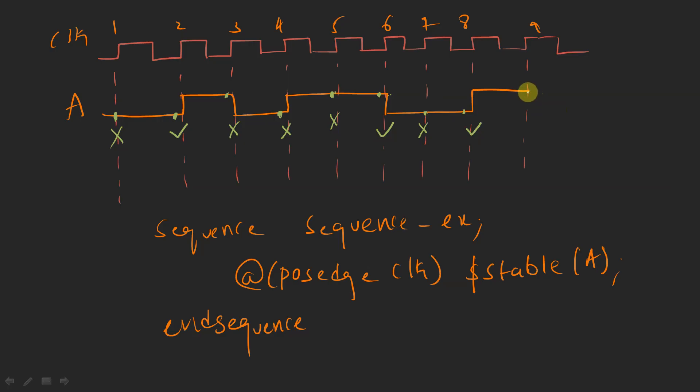At the ninth clock edge, the value was one and at the eighth clock edge it was zero, so there is a transition — it is going to fail. These are the points where your assertion is going to get passed and where it is going to get failed. That's all for this session. If you like this video, like, share, and subscribe to my YouTube channel. Thank you.